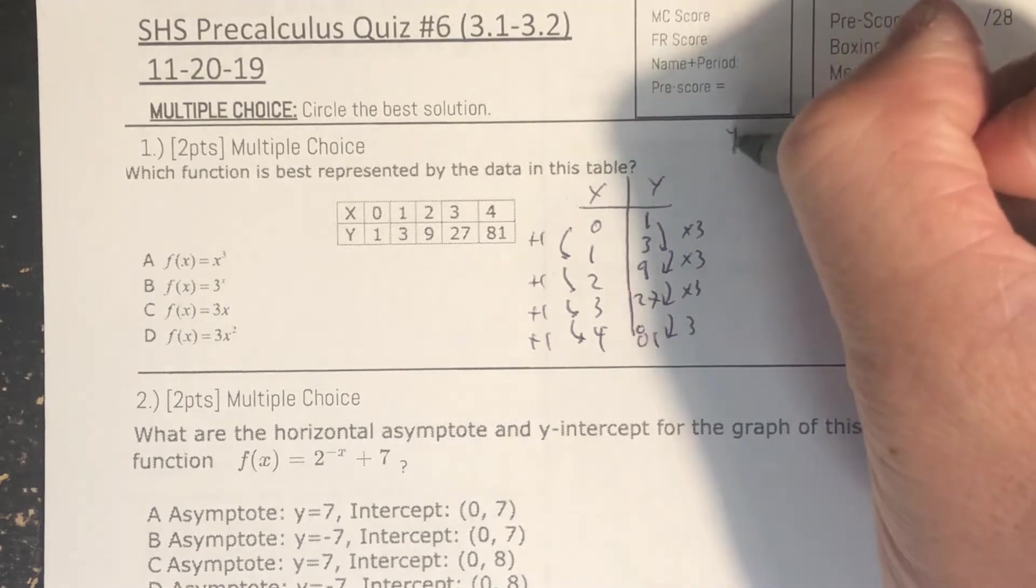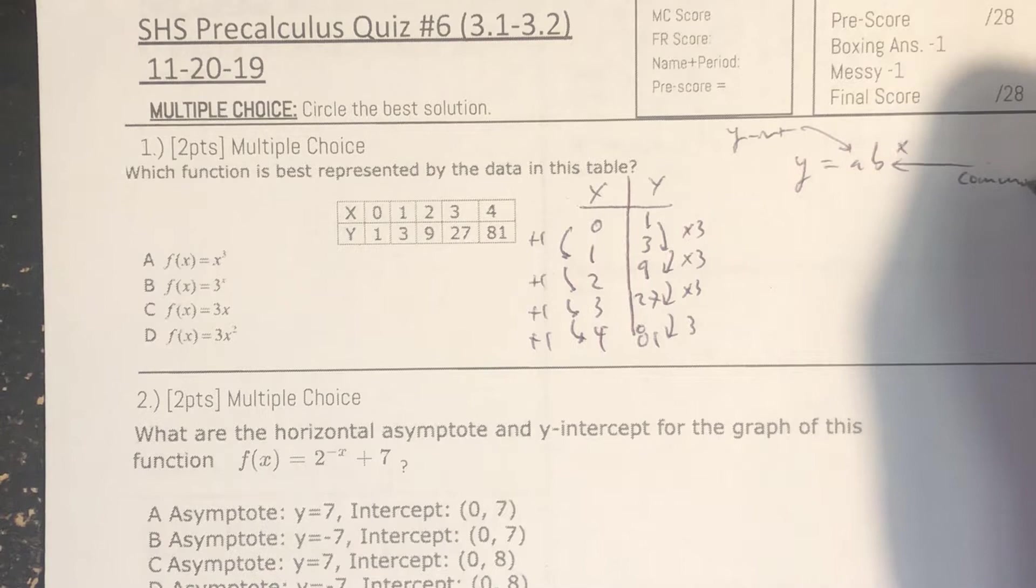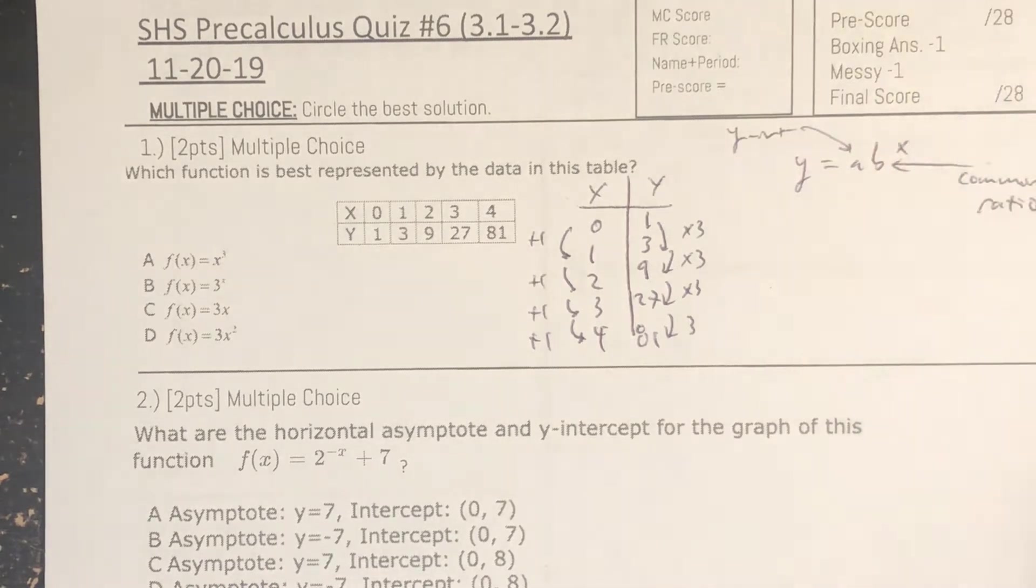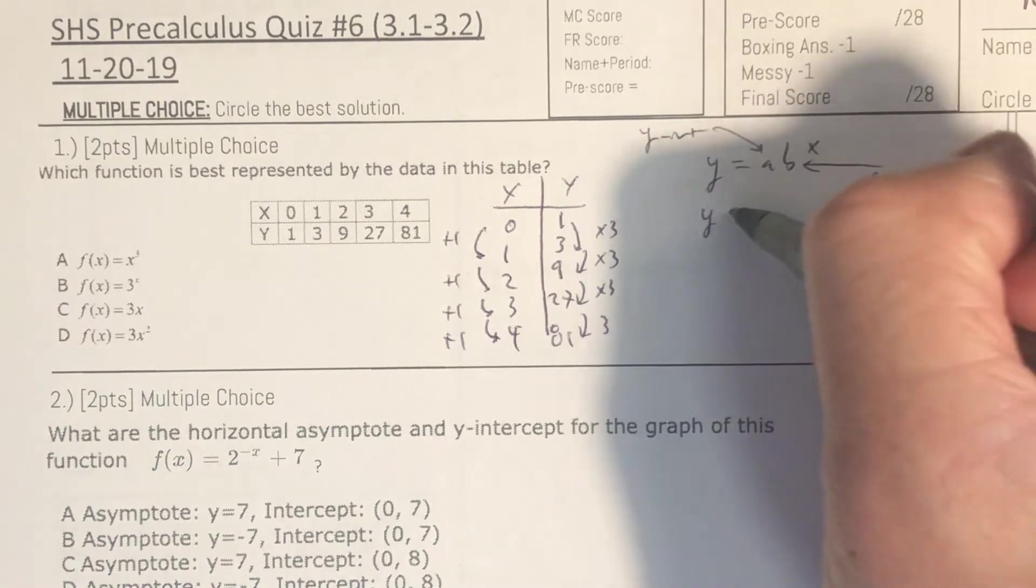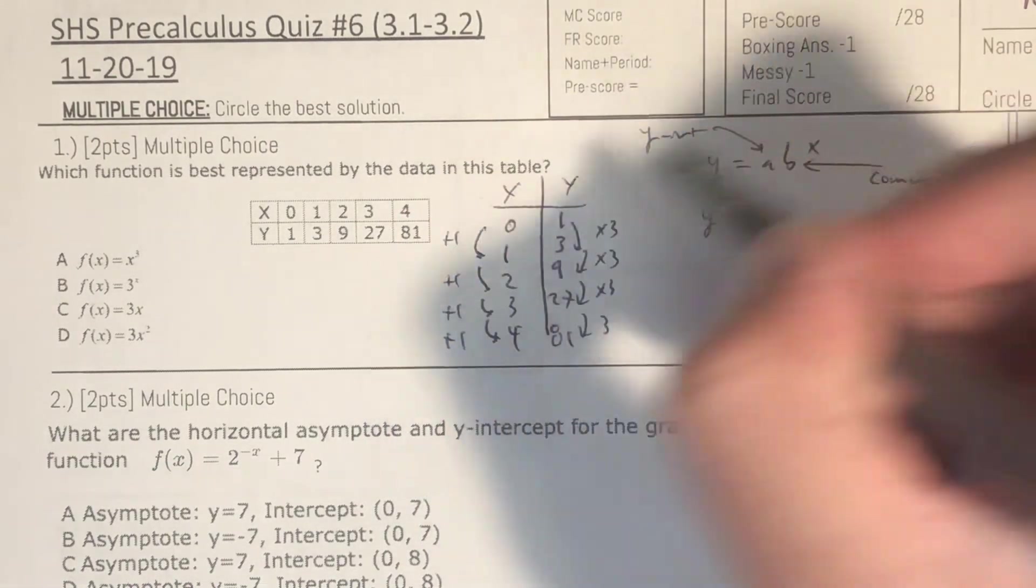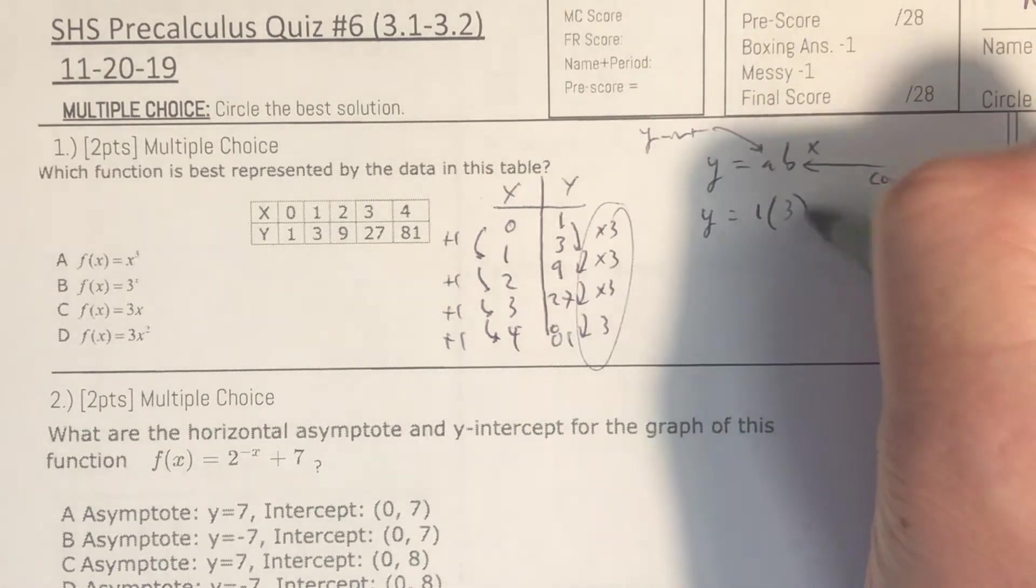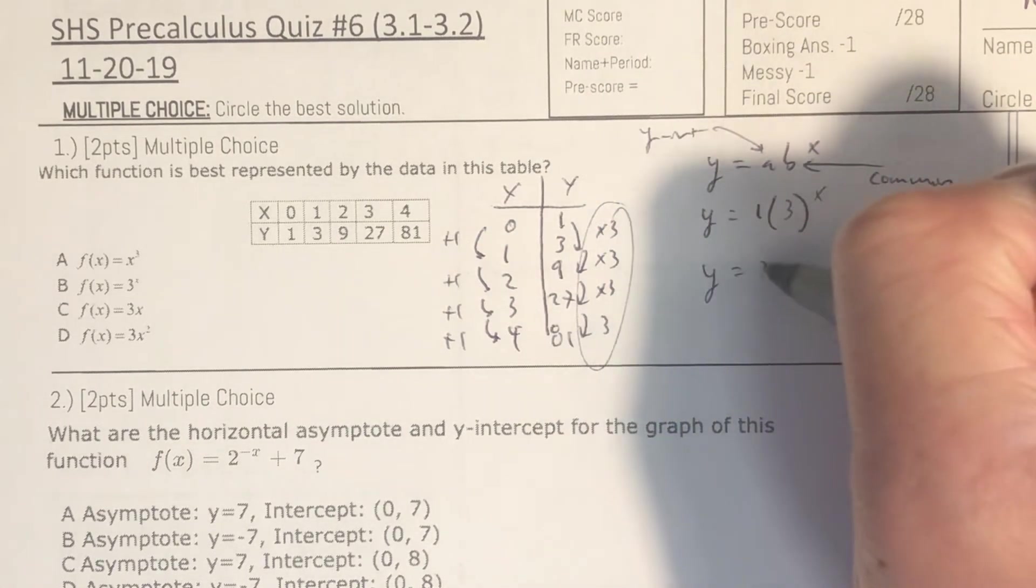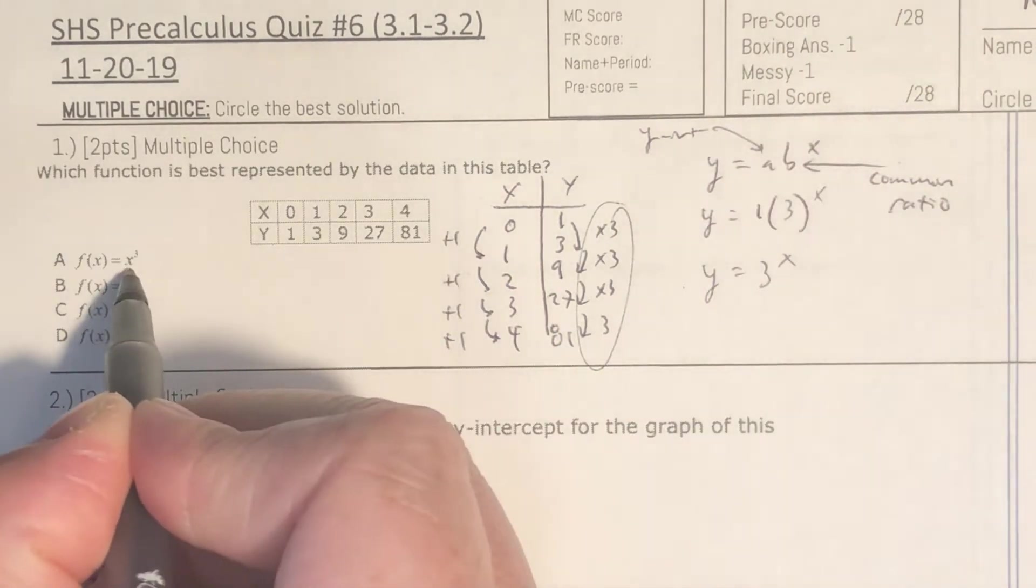And then on this side, I recognize that I'm multiplying by 3. So I have y equals a times b to the x power, exponential function. Your a value is your y-intercept. And your b-value is your common ratio. So my y-intercept is 0, 1. My b-value is 3. My common ratio to the x power. So y equals 3 to the x power. My answer is going to be choice b.